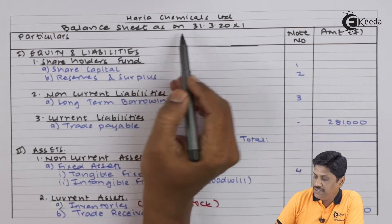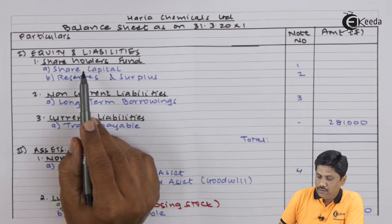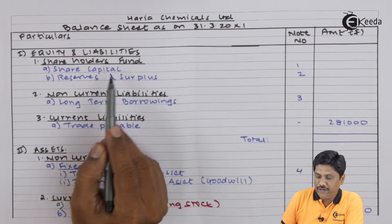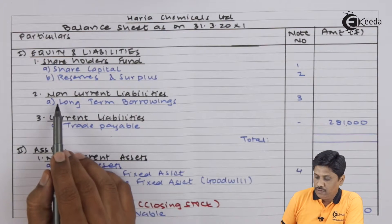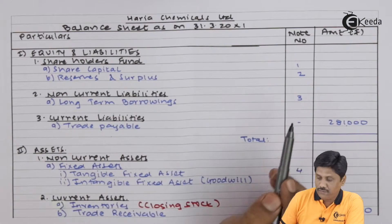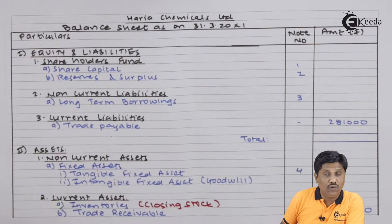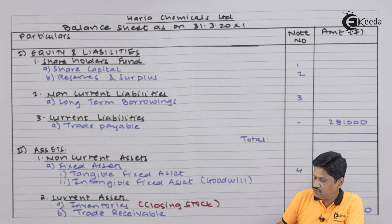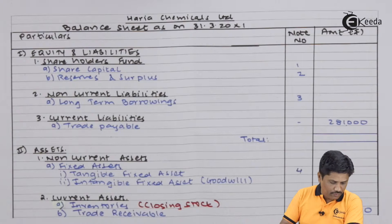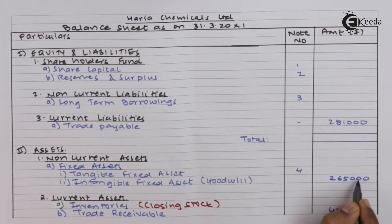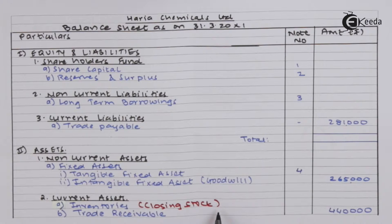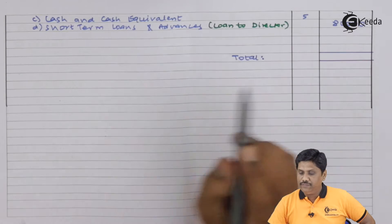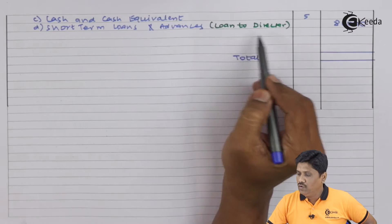Look at the format, students. It is the format of balance sheet as on 31st March 20X1 of Hariya Chemicals Limited. Equity and liability includes: number 1 — shareholders' fund, which includes A) share capital and B) reserves and surplus. Number 2 — non-current liability, that is long-term borrowings. Current liabilities — trade payable, being a single amount. Inventories will have the closing stock. Trade receivable — being a single amount, I will prepare note number 5. Short-term loans and advances: since there is only one item — loan to director — that I have taken care of.